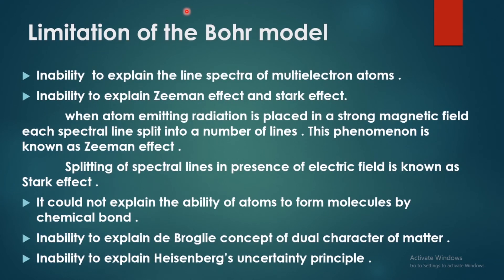Next, the Bohr model's limitations. One limitation is the inability to explain the line spectra of multi-electron atoms. Bohr successfully explained the line spectra of hydrogen, but failed for atoms with more than one electron.